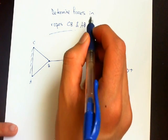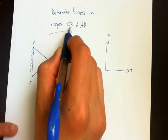In this example, we're asked to determine the forces in ropes CB and AB.